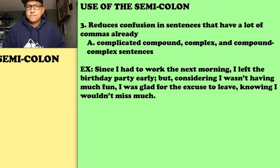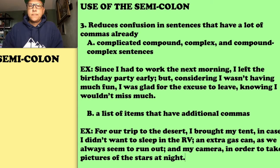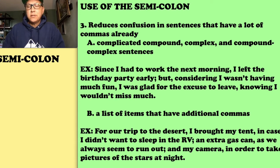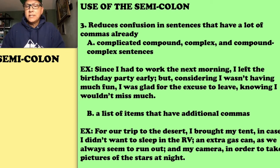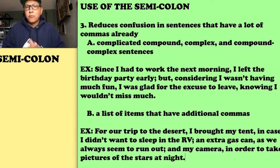The second way a semicolon reduces confusion is in a list of items that already have internal commas. For example: 'For our trip to the desert, I brought my tent, in case I didn't want to sleep in the RV; a gas can, as we always seem to run out; and my camera, in order to take pictures of the stars at night.' The semicolons separate the list items while the internal commas add descriptions — without semicolons this sentence would have six commas.